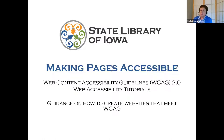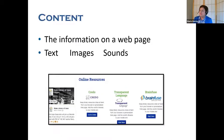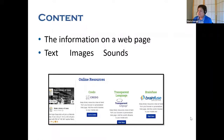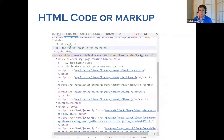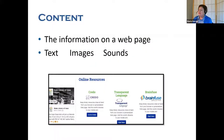Next, I will talk about the essential components of web accessibility. The underlying tenet is that it is essential that several different components of web development and interaction work together in order that the web be accessible to people with disabilities. These components include content — the information in a web page or a web application, including natural information such as text, images, and sounds. On your Plow sites using Concrete CMS, this is what you have the most control over.